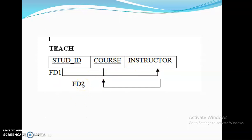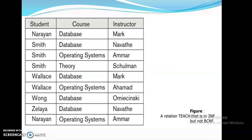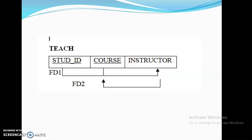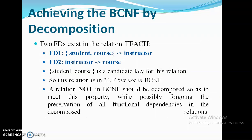FD2 says Instructor identifies Course, which is against BCNF but is in 3NF. The relation Teach is in 3NF but not BCNF since Instructor is not a prime attribute or a super key. To achieve BCNF by decomposition: one relation captures Student-Course identifies Instructor, and another captures Instructor identifies Course, where Student and Course are candidate keys.